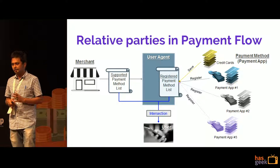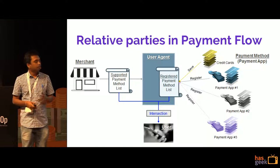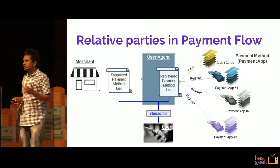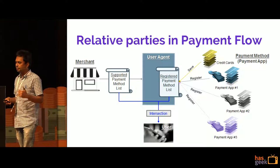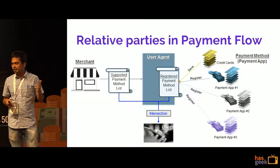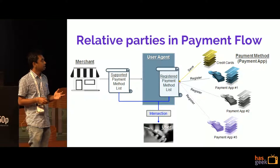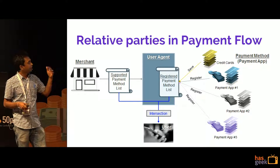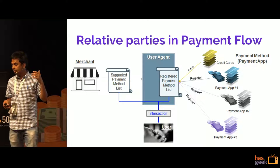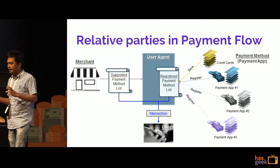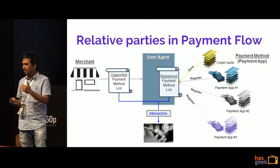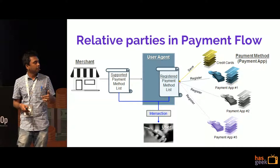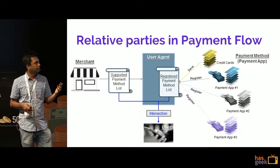The relevant parties in the payment flow are the merchant, the user agent, and the actual user, and there are multiple payment methods. Basically, the merchant gives the list of supported payment methods it will accept, and the user agent — which is the browser — has the list of payment methods the user has already registered. The browser finds the intersection of those payment methods and generates a selection UI for the user. The overall goal for the web payment API is to integrate with payment apps as well.